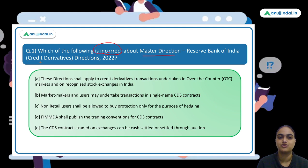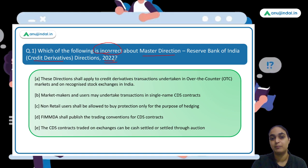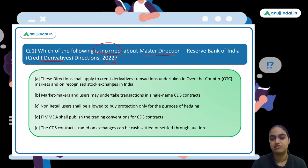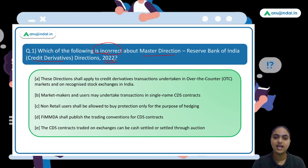The first question asks which of the following is incorrect about the Master Directions — RBI Credit Derivative Directions 2022. In the last session, where monetary policy statement and the statement on development and regulatory measures were discussed, we talked about the credit derivatives that RBI is soon going to come up with. Credit default swaps and their working were discussed in detail there, so please go through that session as well before proceeding.